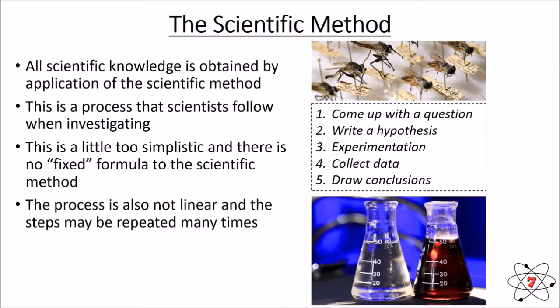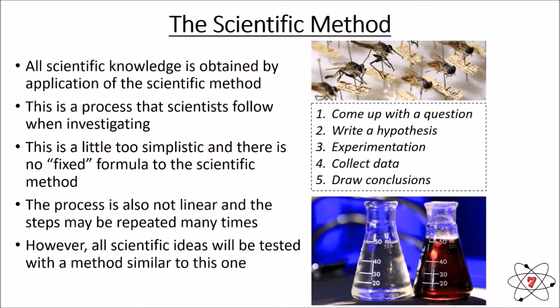Now, another key point is the process isn't linear. This means it doesn't follow a straight line. So you may come up with a question, write a hypothesis, do some experimentation, and you might find that your hypothesis isn't correct. So you go back and you rewrite your hypothesis, do more experimentation, re-find the hypothesis again, collect more data. And you go backwards and forwards and the steps can go in any order as long as they're all completed. Now all scientific ideas are tested using a similar scientific method to this. Anything that's not tested with this is not science.